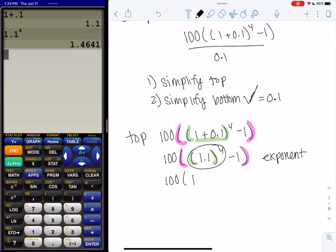100, 1.4641, minus 1. So now I'm almost done with those pink parentheses. I'm going to subtract, and that's because I'm still inside parentheses.